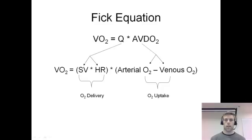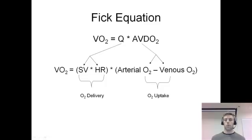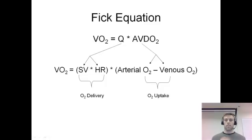VO2 equals cardiac output (represented as Q) times ABDO2. Cardiac output is stroke volume times heart rate. What we're really looking at here is O2 delivery and O2 uptake — we have to deliver oxygen to our tissues, and then our tissues have to take it in and use it. Cardiac output handles the delivery, and ABDO2 represents the uptake.